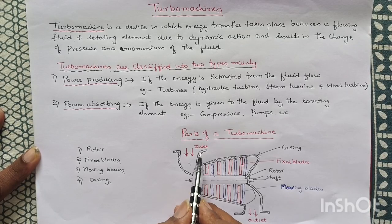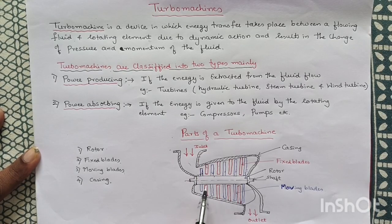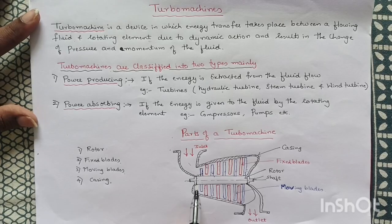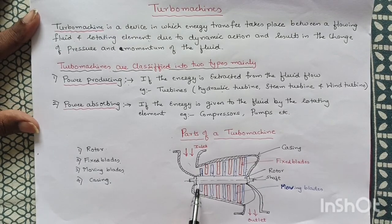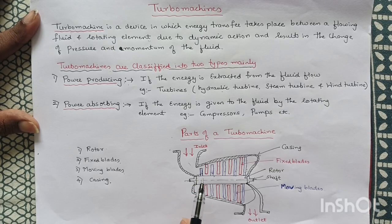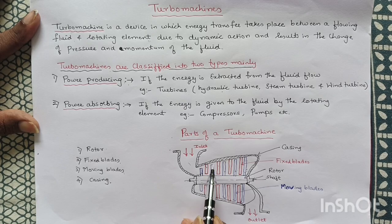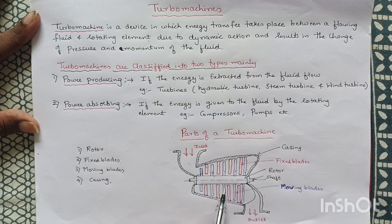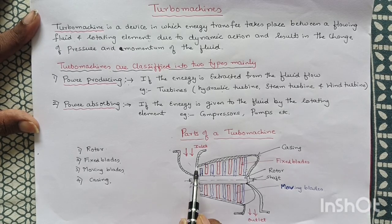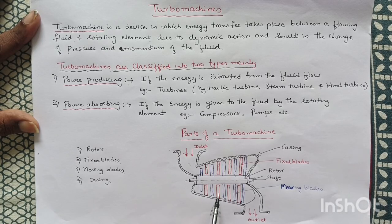You can see here, this is the Rotor, also called the Rotary Drum, which is mounted on this shaft. The moving blades are mounted on this Rotary Drum. These are the moving blades mounted on the Rotary Drum, and these are the fixed blades which are mounted on the casing.